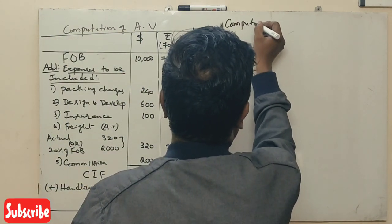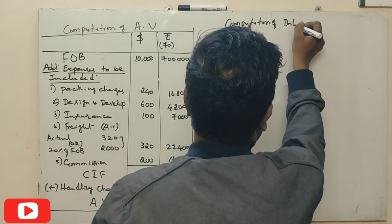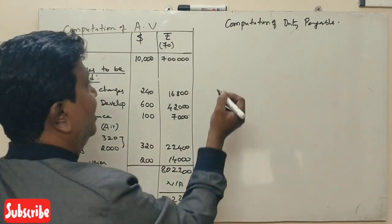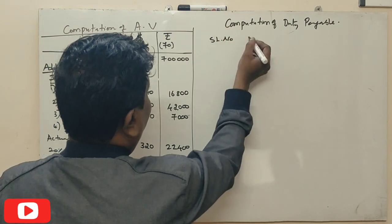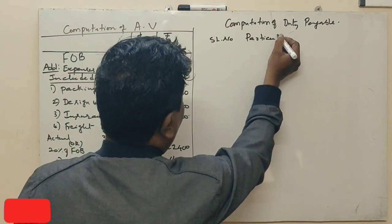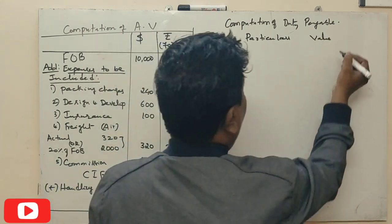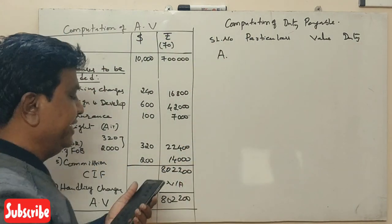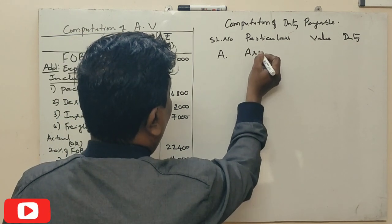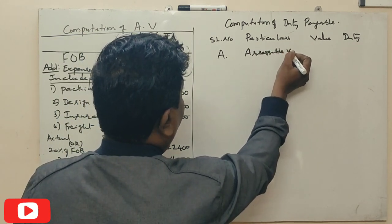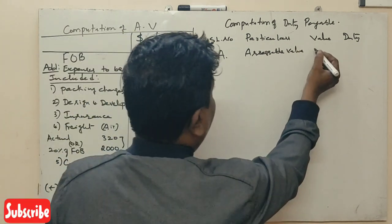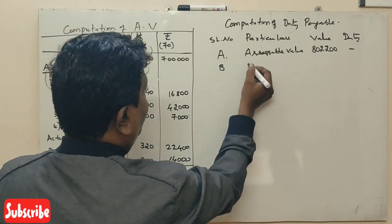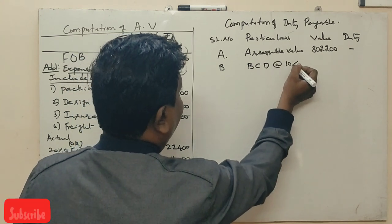Next, we can calculate computation of duty payable. Setting up the table: serial number, then particular, value, duty payable, duty. Serial number A, assessable value calculated is 8 lakh 2 thousand 200 rupees.